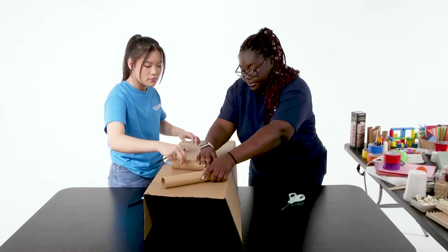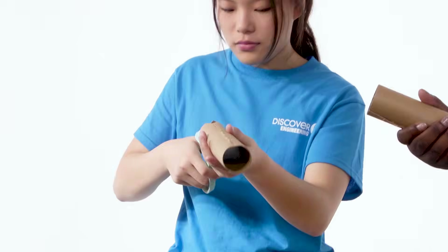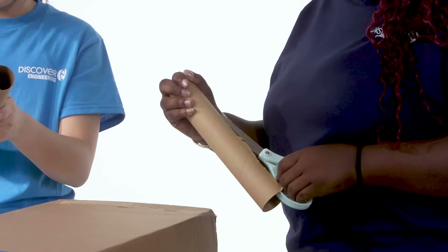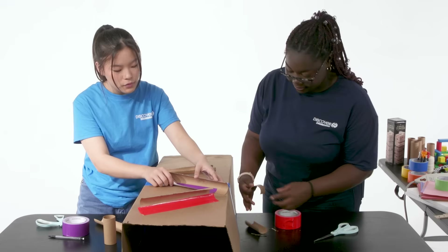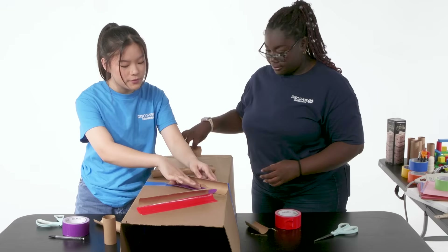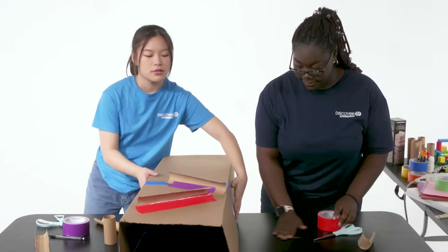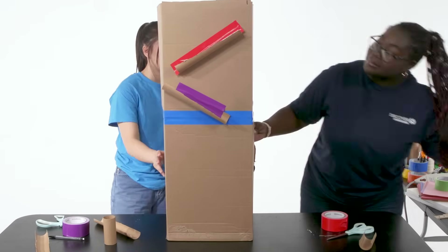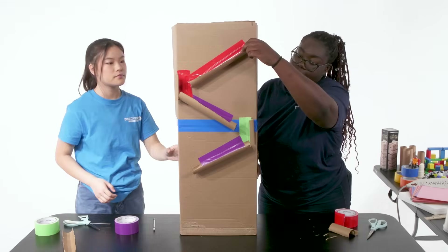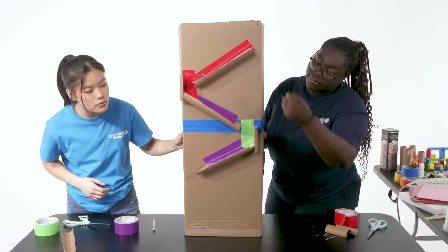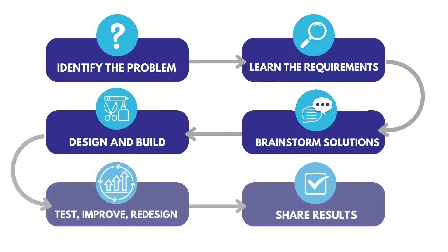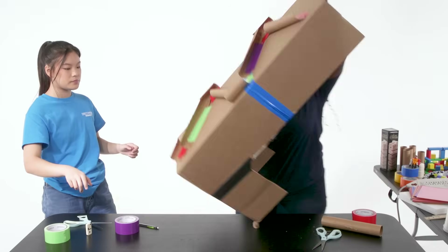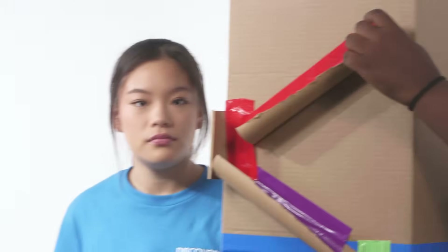Before we start, how about we plan out what we're thinking. How about we test just this first? Remember to use the engineering design process while building your contraption. Chain reactions are tricky and they won't always work perfectly on your first try. So use your imagination, creativity, and engineering skills to experiment, test new ideas, and improve your design.